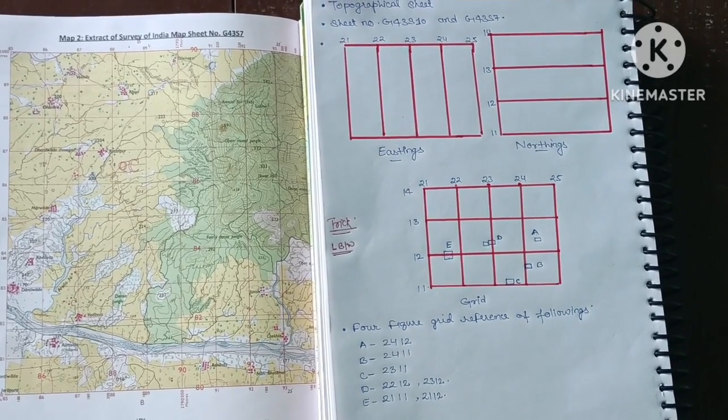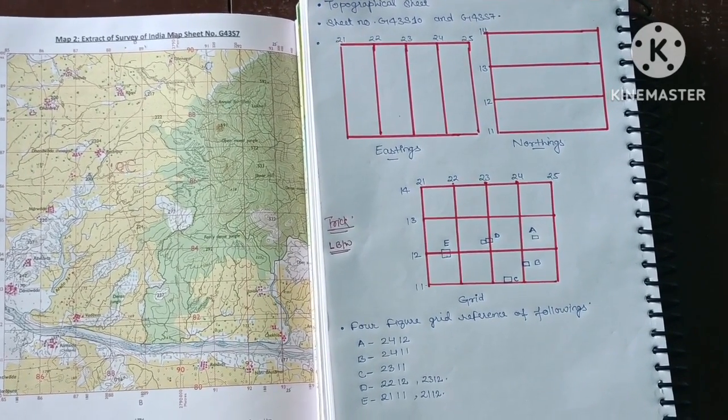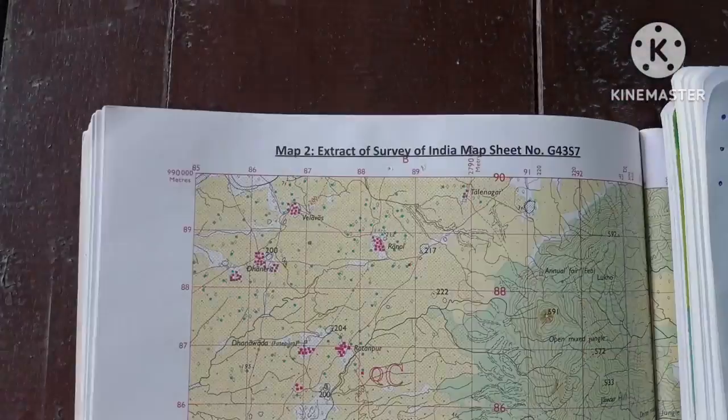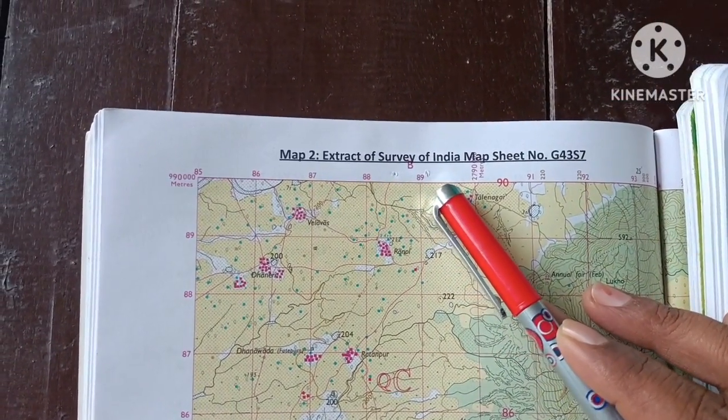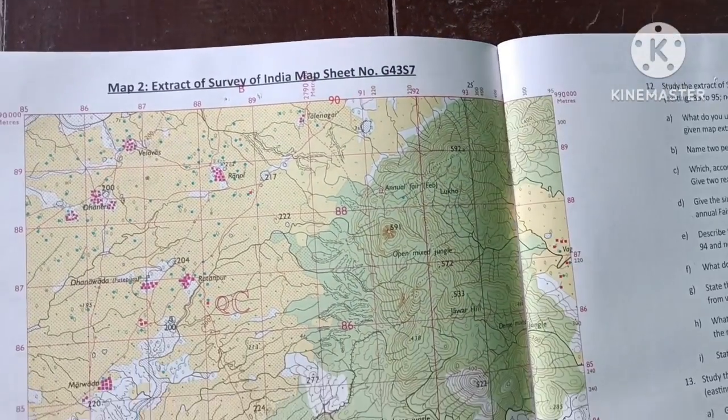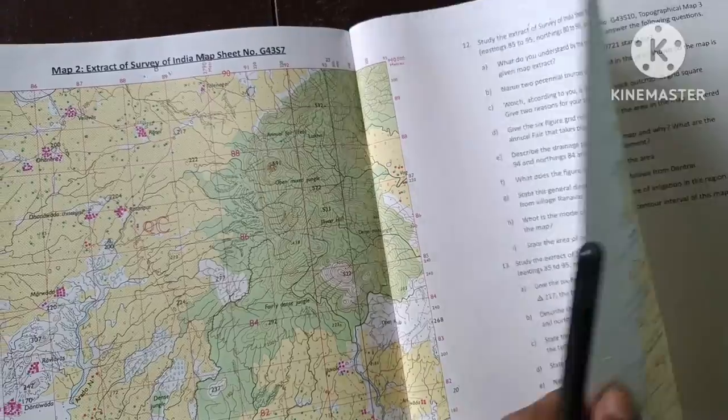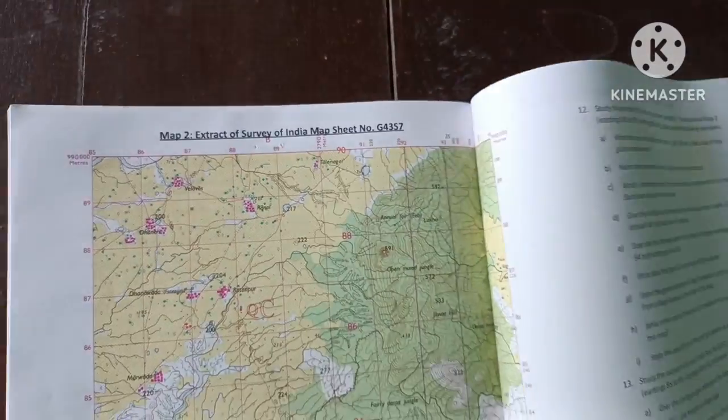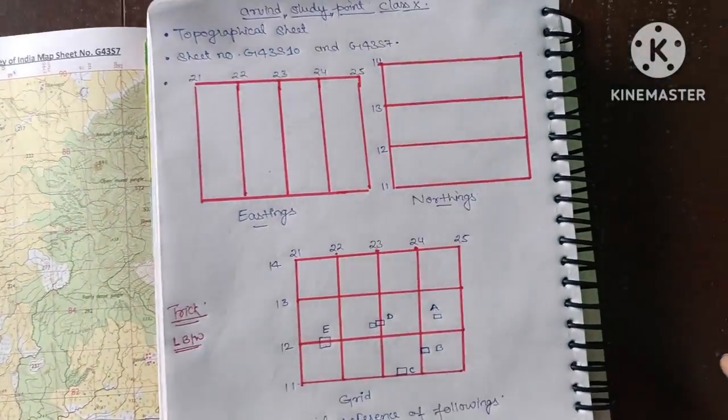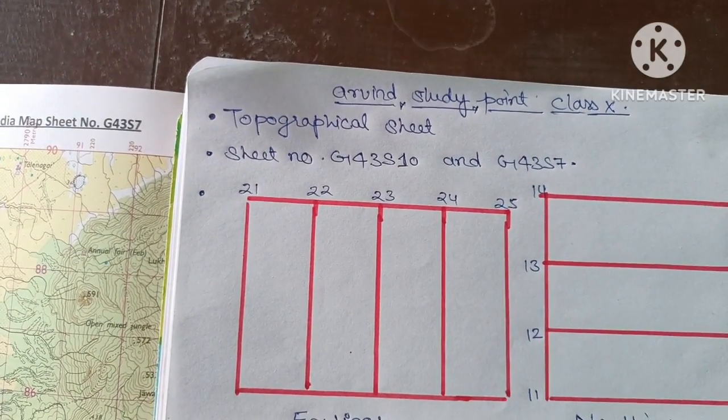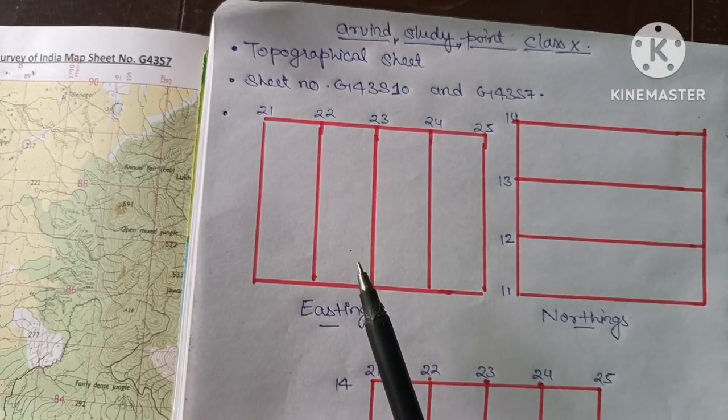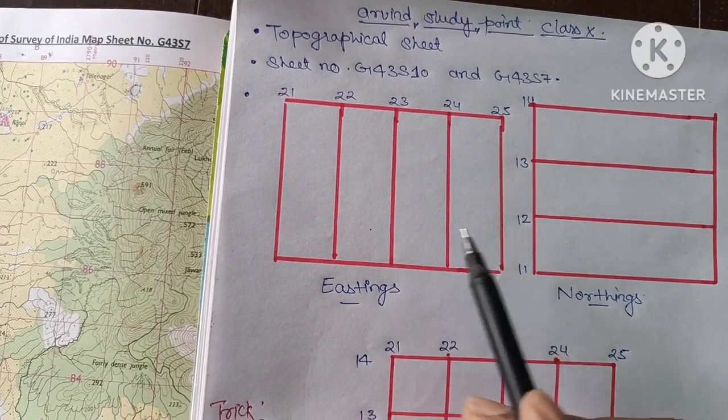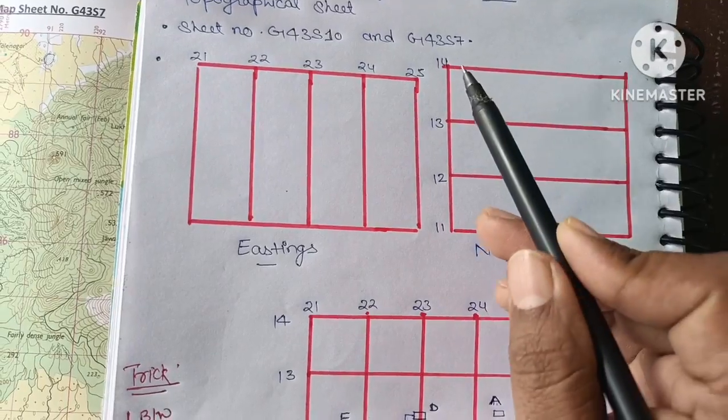First question in the topographical sheet is the four-figure grid reference. So here I am going to explain how to find four-figure grid reference scoring two marks in your board examination. This is the extract survey of map India, sheet number G43S7 and we have another that is sheet number G43S10. First point which we are going to cover is topographical sheet.